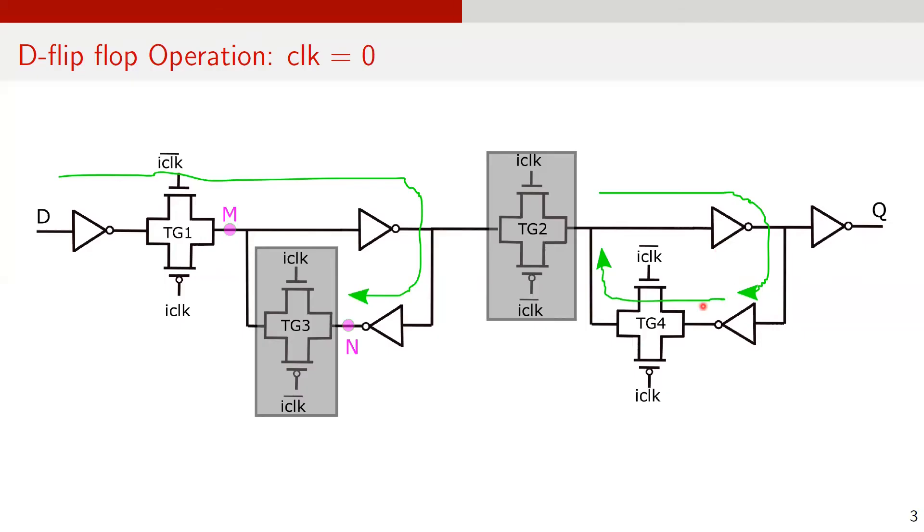Further, since TG4 is on, the old data is stored in the slave latch.